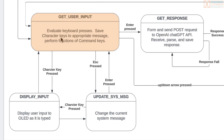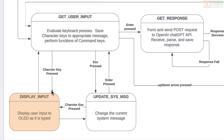From the 'get user input' state, there are four different ways to leave, all based on different key presses. If a character key is pressed and saved, it goes to another state: the 'display input' state.